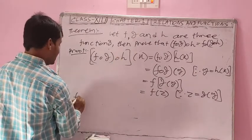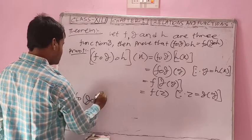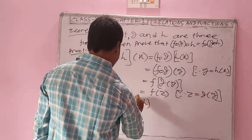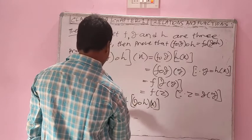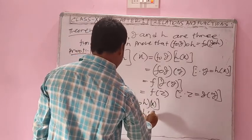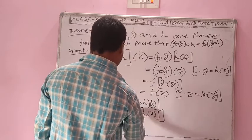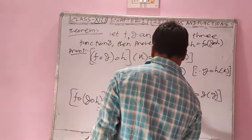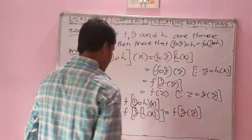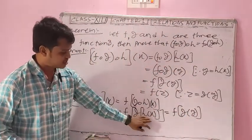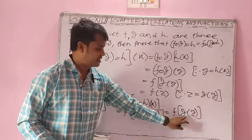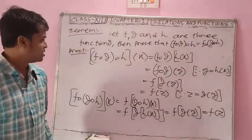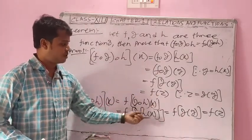Now take the right-hand side: f∘(g∘h) of x. This equals f of (g∘h)(x). By definition, g∘h of x is g(h(x)) = g(y), where y = h(x). Taking g(y) = z, we get f(z). So the right-hand side is also f(z).